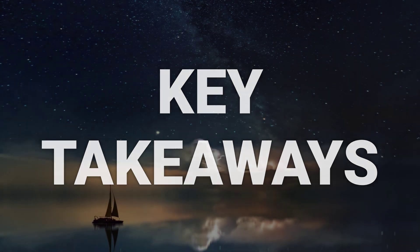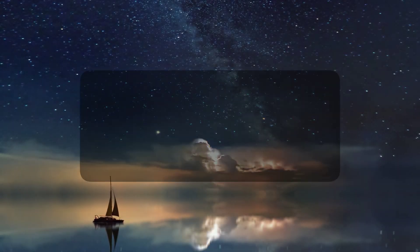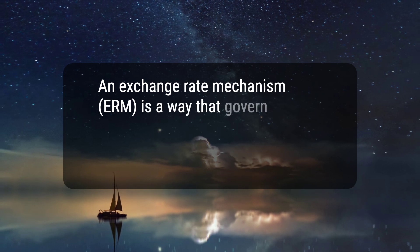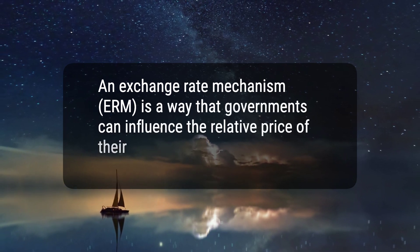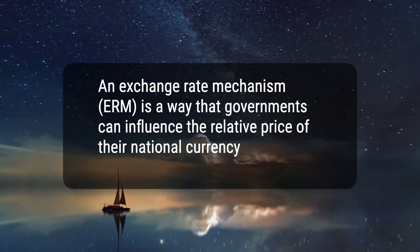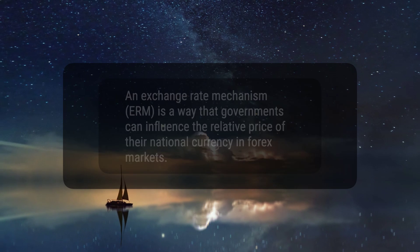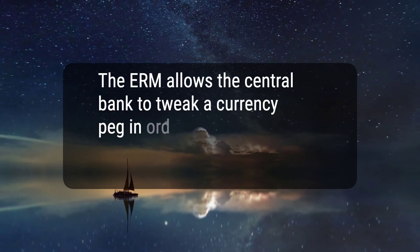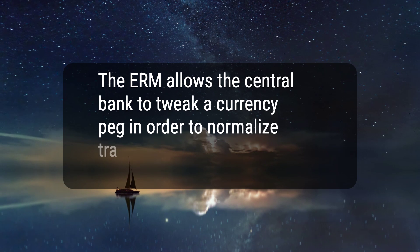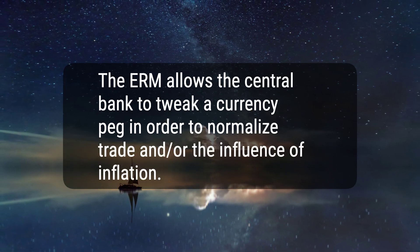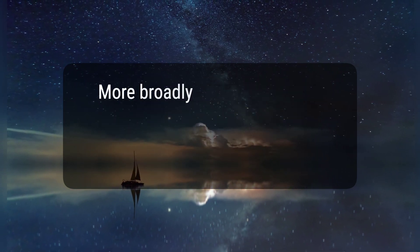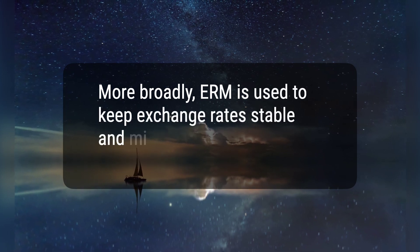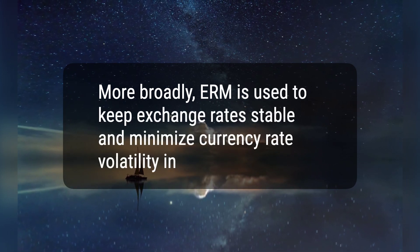Here are three key takeaways. One, an exchange rate mechanism (ERM) is a way that governments can influence the relative price of their national currency in forex markets. Two, the ERM allows the central bank to tweak a currency peg in order to normalize trade and/or the influence of inflation. Three, more broadly, ERM is used to keep exchange rates stable and minimize currency rate volatility in the market.